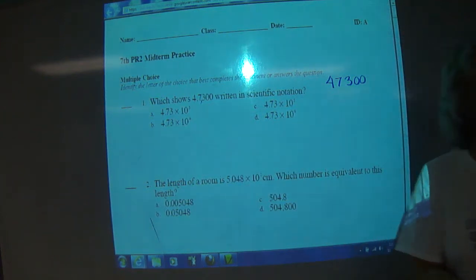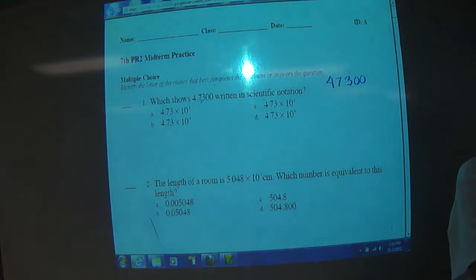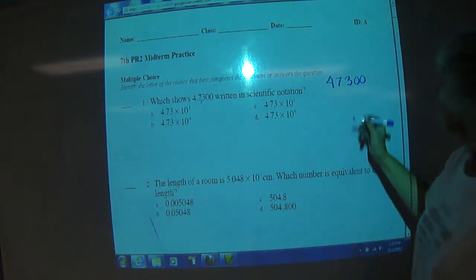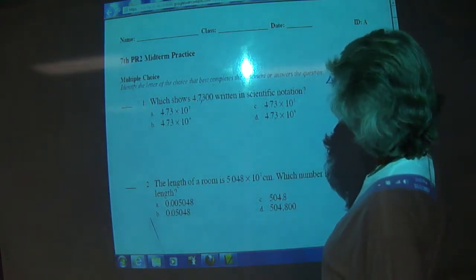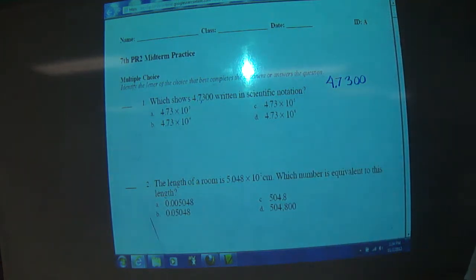And how many places can you have? You only have a ones place, right? And so you want it to be 4.73 something, okay?